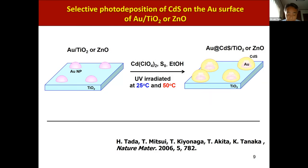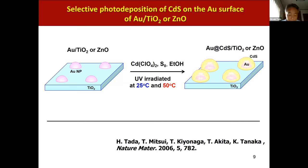For the catalyst preparation, we used the photodeposition technique previously developed. At the first step, gold nanoparticles are deposited on TiO2 by the deposition-precipitation method. At the second step, Au/TiO2 is irradiated by UV light in an ethanol solution containing cadmium ions and elemental sulfur. This method is also applicable to Au/ZnO, and CdS photodeposition was carried out at 25 and 50 degrees Celsius.